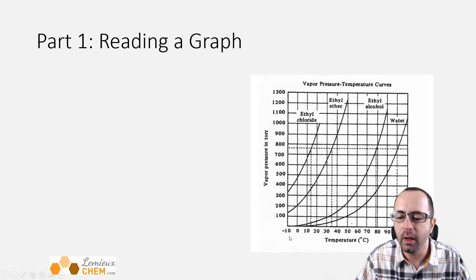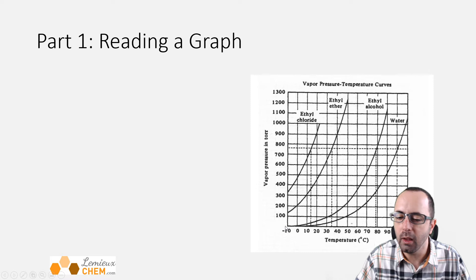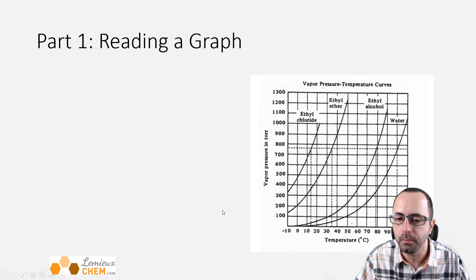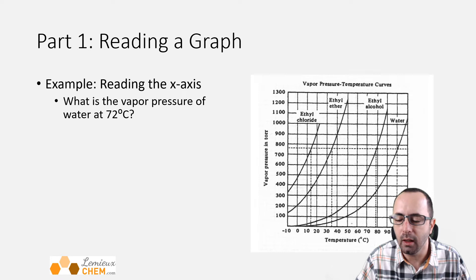A few properties of the graph I'll point out. Notice that the graph does not have to start at the origin at zero — it can, and it's kind of convenient when it does, but it doesn't have to. What must be a part of a graph is evenly spaced divisions. Every box here represents the same thing on the vertical axis: 100 Torr. On the horizontal axis, each box represents 10 degrees Celsius. They don't have to equal the same amount on either axis, but they do have to be consistent on each axis.